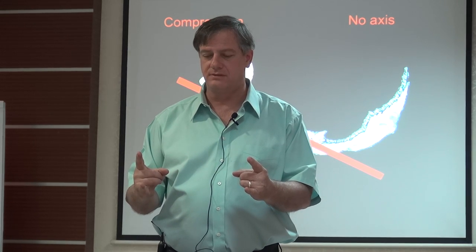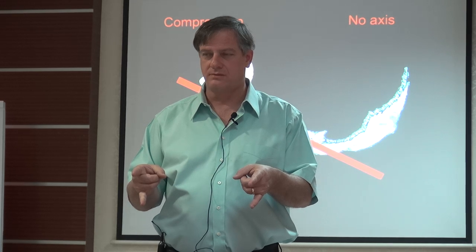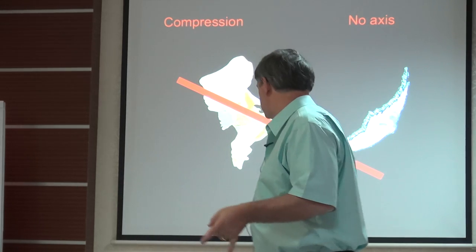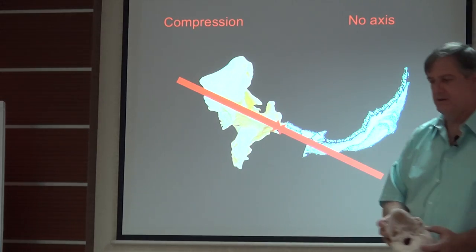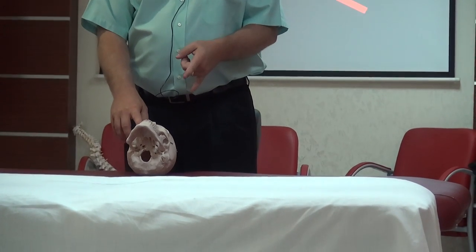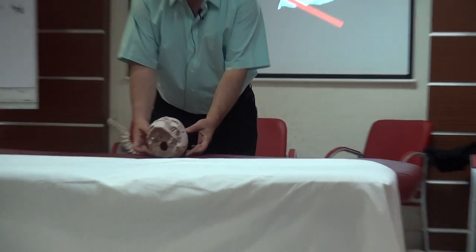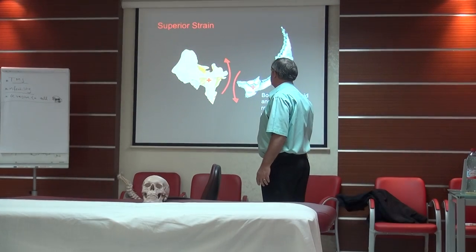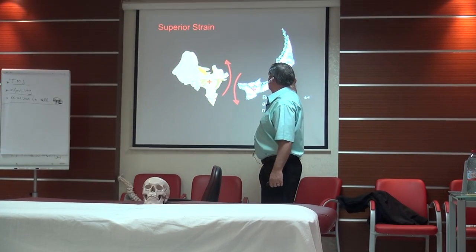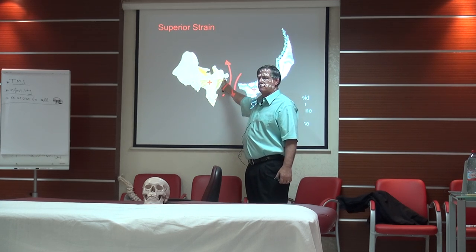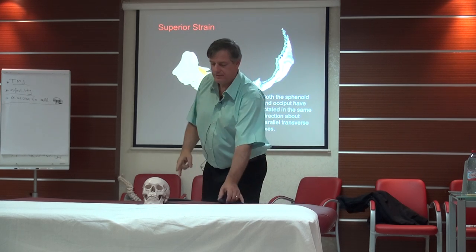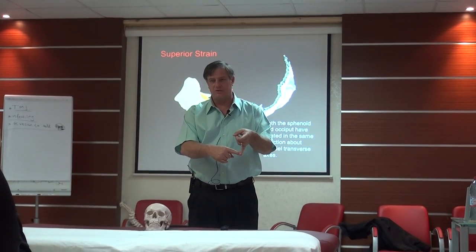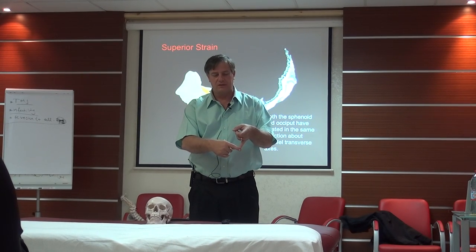Inferior shear, superior shear. This is superior — my pinkies are coming back toward superior. The patient is laying here, so your pinky is coming back here — superior. What happens to the squamous of the occiput is what's happening; what you feel here represents what's happening there that you don't feel. The squamous comes superior towards your chest, towards your stomach. That's the superior shear; that's the inferior shear.